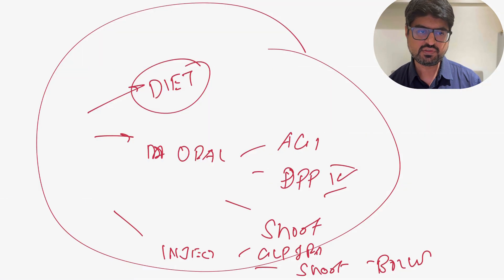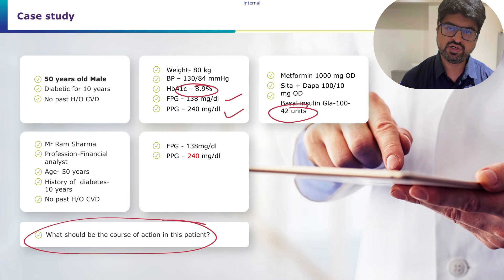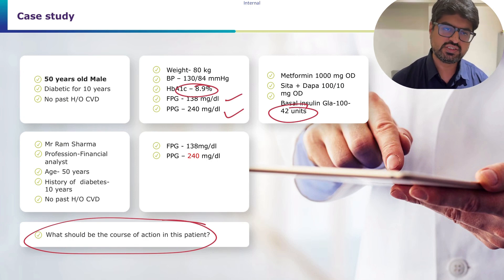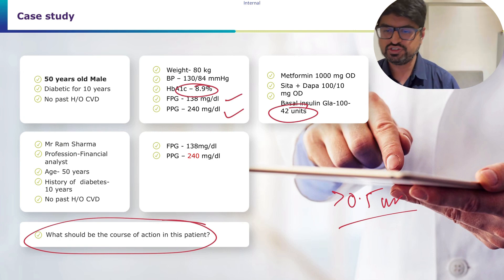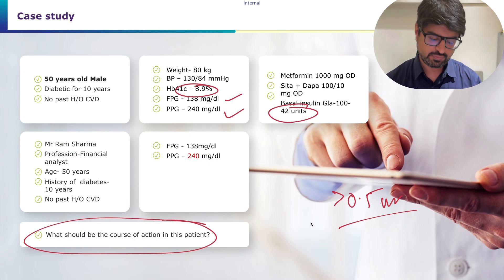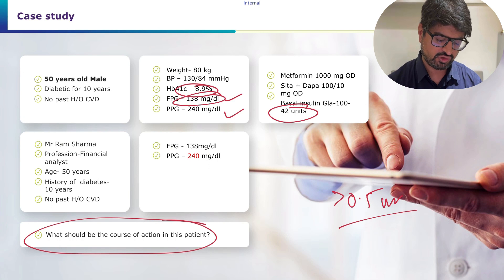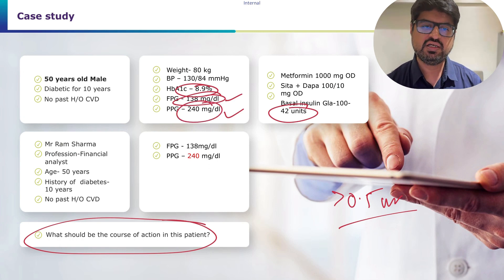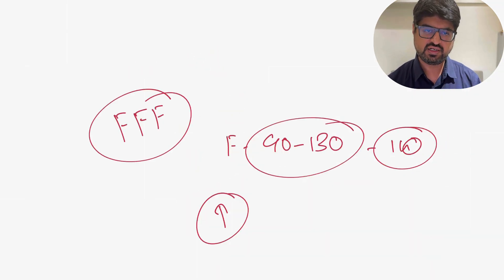Returning to our case: the patient's basal insulin is 42 units and weight is 80 kg — that's more than 0.5 units/kg/day (0.5 × 80 = 40 units). Additionally, despite the fasting sugar being reasonably on target (90–140), HbA1c remains high, indicating significant post-meal sugar contribution. Both criteria for basal plus therapy are fulfilled.